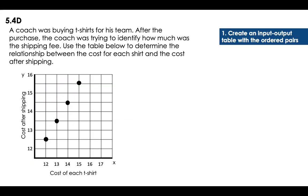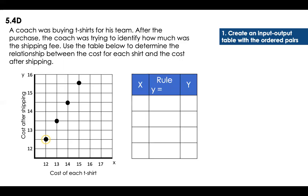A coach was buying two shirts for his team. After the purchase, the coach was trying to identify how much the shipping fee was. Use the table below to determine the relationship between the cost for each shirt and the cost after shipping. So here you have a graph with the x-axis at the bottom and the y-axis vertical. Now I have to create an input-output table with the ordered pairs.